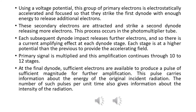At the final stage, sufficient electrons are produced as a pulse of electrical signal. This pulse carries the information about the energy of the original incident radiation. The number of such pulses per unit time also gives information about the intensity of the radiation.